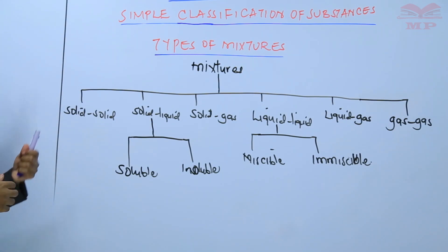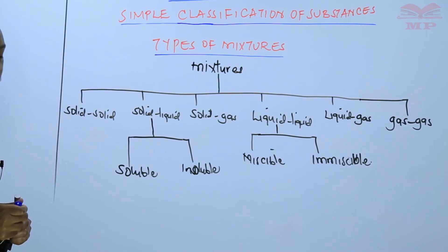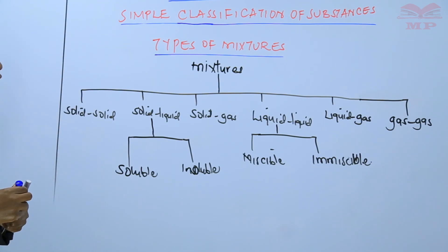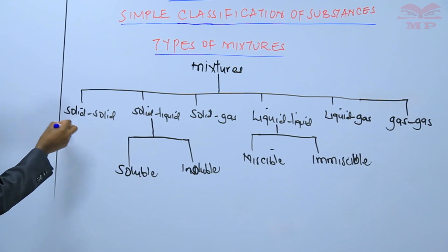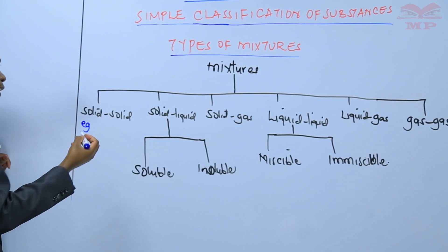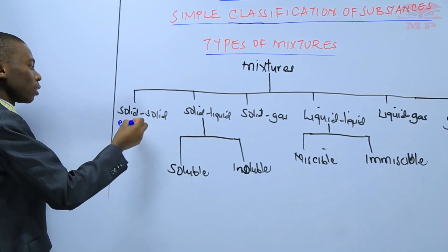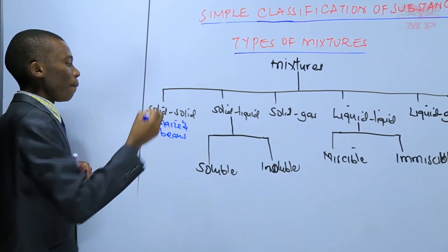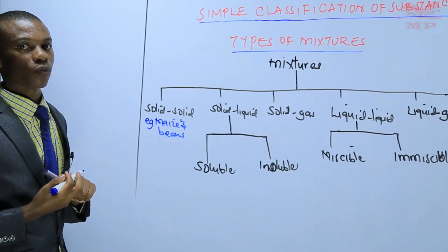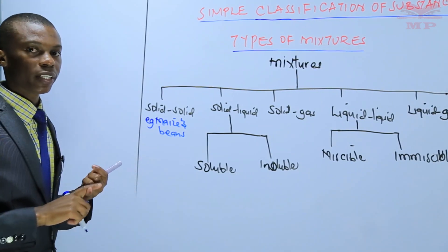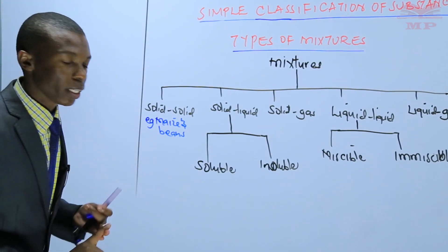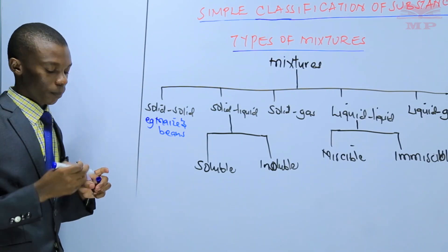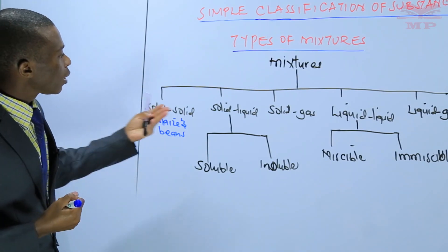Let us start with the solid-solid mixture and give examples. A good example of a solid-solid mixture is maize and beans. Maize is a solid, beans is a solid, and therefore this mixture lies under the solid-solid category.